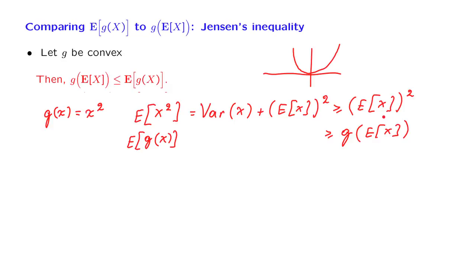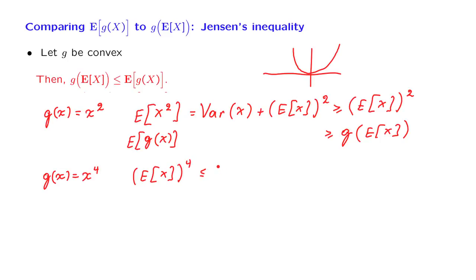For the case of the square function, Jensen's inequality did not tell us anything we didn't already know, but it's nice to confirm consistency. We could use Jensen's inequality in another setting where the answer might not be as obvious. For example, take the function x to the fourth, which is also a convex function. Jensen's inequality tells us that the fourth power of the expected value is less than or equal to the expected value of x to the fourth.